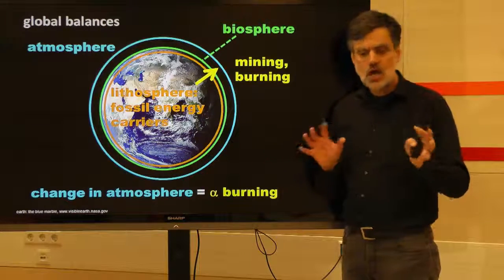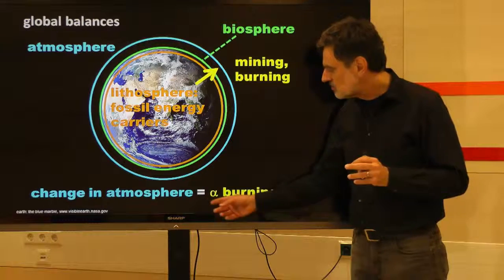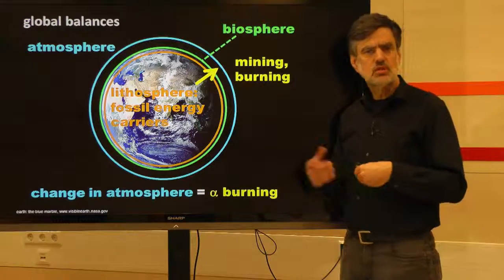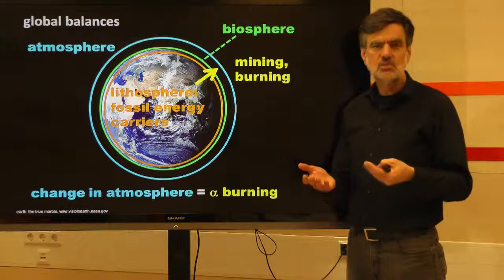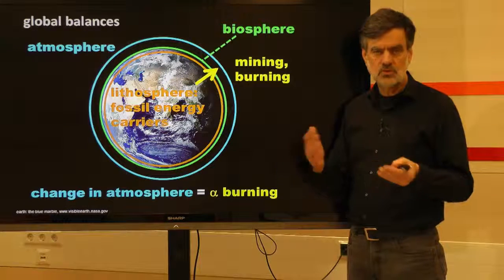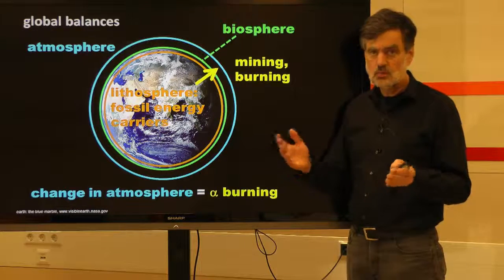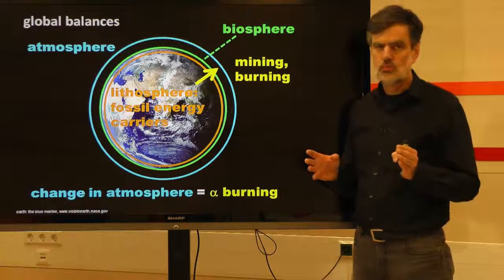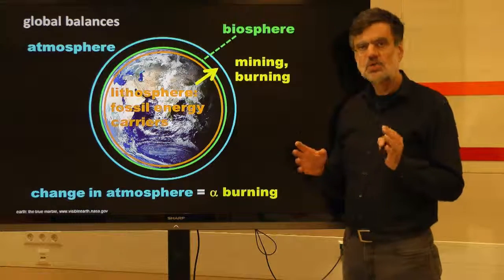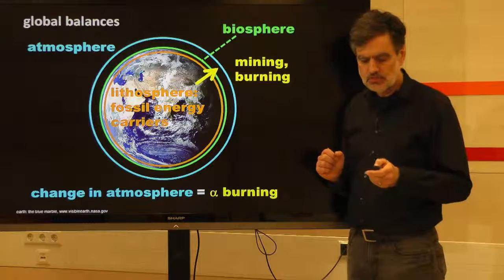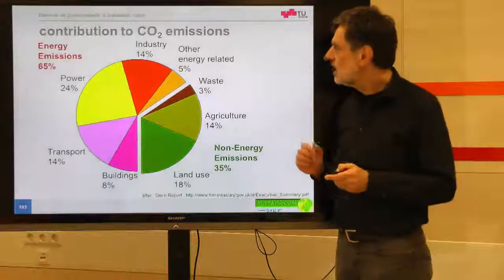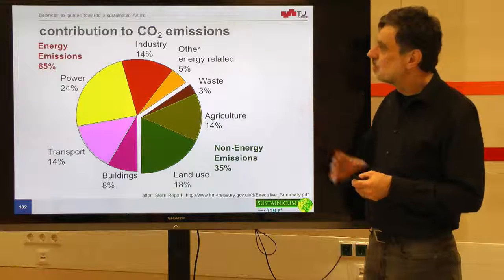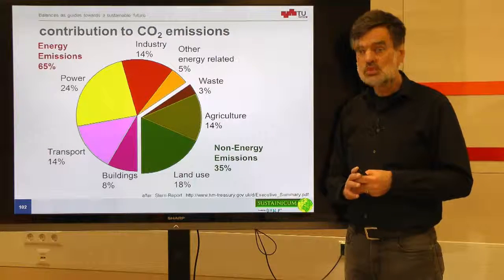We should argue a little bit about what this factor alpha should be. Presumably, according to what we've discussed, it should be something between zero and unity — somewhere in that range. We actually don't know where it should lie, but we can think about it. We can look at the contributions to CO2 emissions globally speaking.